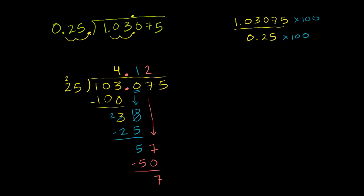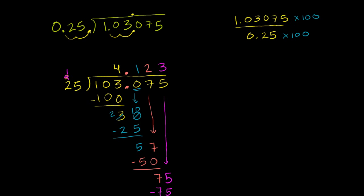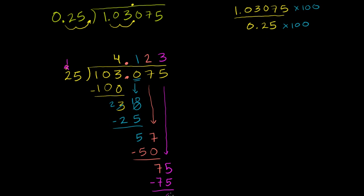And now we're almost done. We can bring down this 5. We bring down that 5 right over there. 25 goes into 75 three times. 3 times 25 is 75. We say 3 times 5 is 15. Regroup the 1. 3 times 2 is 6 plus 1 is 7. So you can see that. And then we subtract. And then we have no remainder.